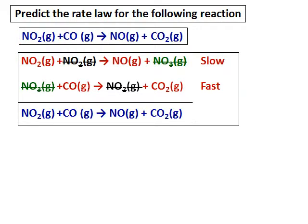Consider the reaction given. Let's apply how to write the rate law based on the reaction mechanism given. The reaction is nitrogen dioxide combining with carbon monoxide to give NO and carbon dioxide. The proposed mechanism has a first step where two molecules of NO₂ combine to give NO and NO₃.